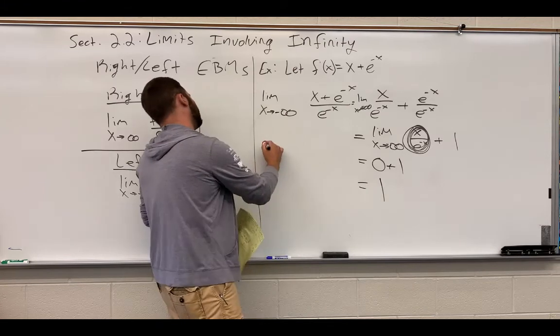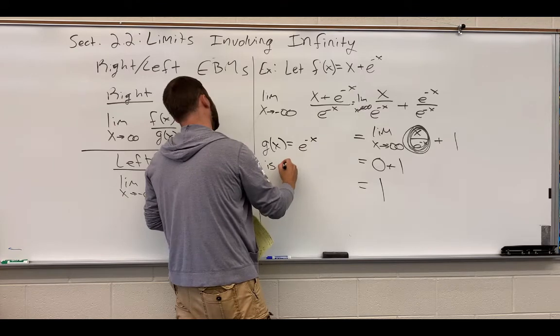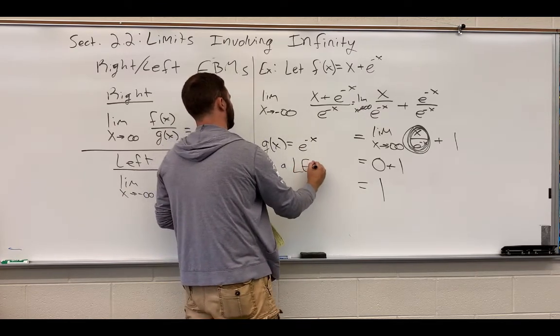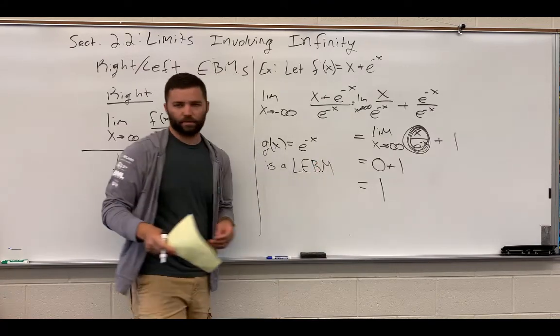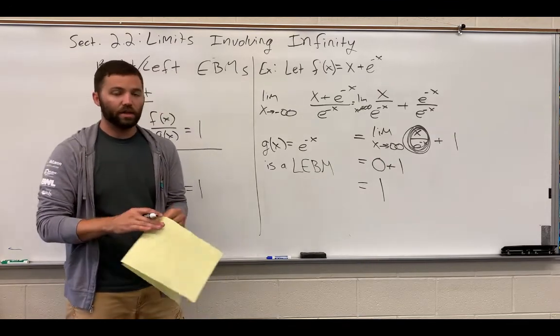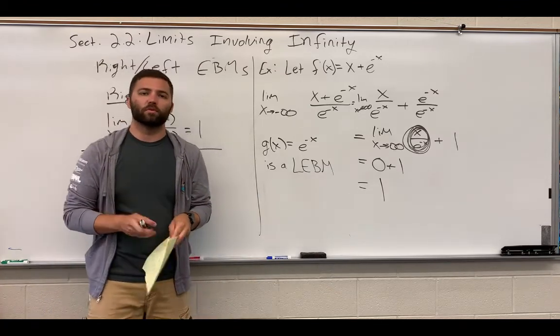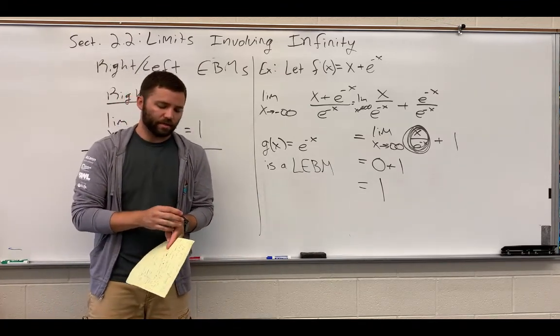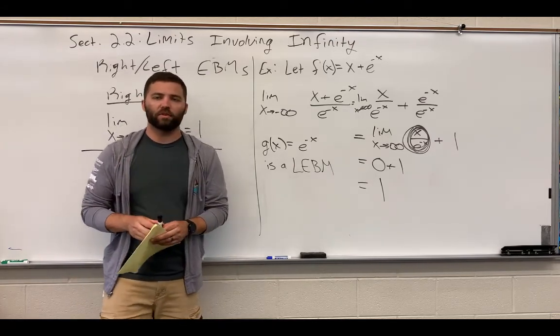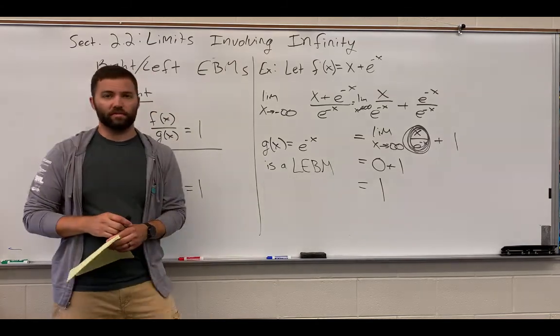Therefore, g(x) equals e to the negative x is a left end-behavior model. That's pretty much it for end-behavior models. Just to reiterate, you will have to prove that a function is an end-behavior model, both left, right, and in general. You'll want to make sure that you get some good practice on that and that you totally understand what's going on here. As usual, let me know if you have questions in class, and that's it for end-behavior models and section 2, limits involving infinity.